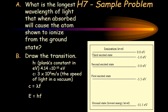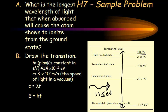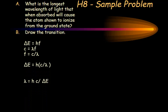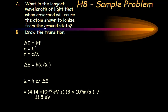What's the longest wavelength of light that, when absorbed, will cause the atom shown to ionize from the ground state? In other words, if you have an electron here, what's the minimum energy photon needed for it to get to zero electron volts? You would need an 11.5 electron volt photon to come in to make it ionized. Calculating this out, the transition is 11.5 electron volts and we can get the wavelength to be 108 nanometers.